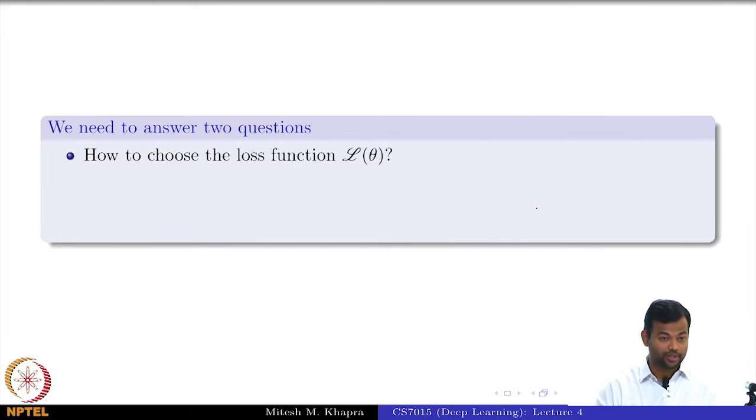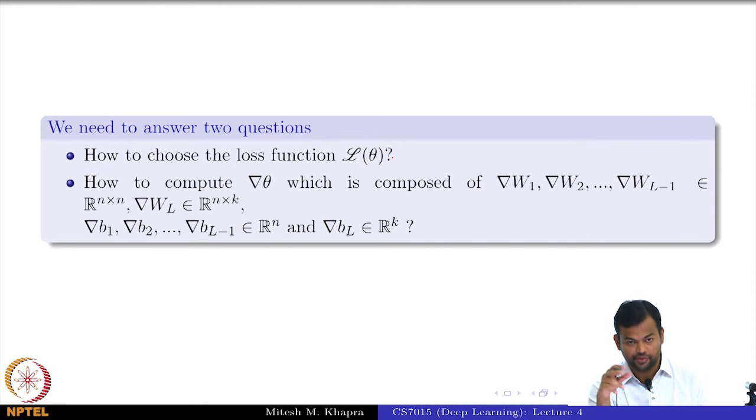Now we need to answer two questions. First is the key question: because we are taking derivative of what? Loss function. We need to know what the loss function is, and that is a crucial question. Then we are taking derivatives with respect to all these elements. Whatever I told you—that assume that oracle gives you—now you have to do the hard work and actually find it out. If you can answer these two questions, then we are done. We have an algorithm for learning the parameters of a feedforward neural network.